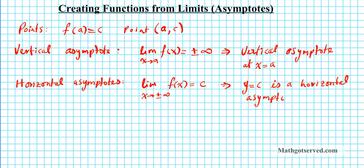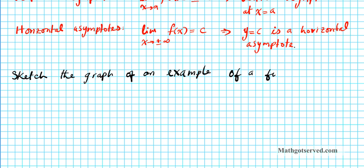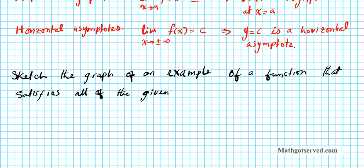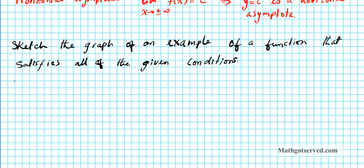This framework is what will guide the construction of our function. The instructions for question number one are to sketch the graph of an example of a function that satisfies all of the given conditions. There are multiple answers that could satisfy the conditions, but your task is to sketch at least one example.